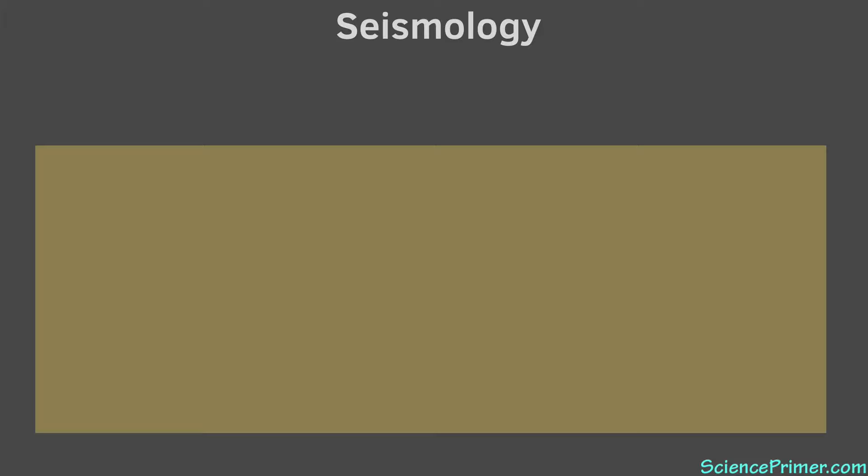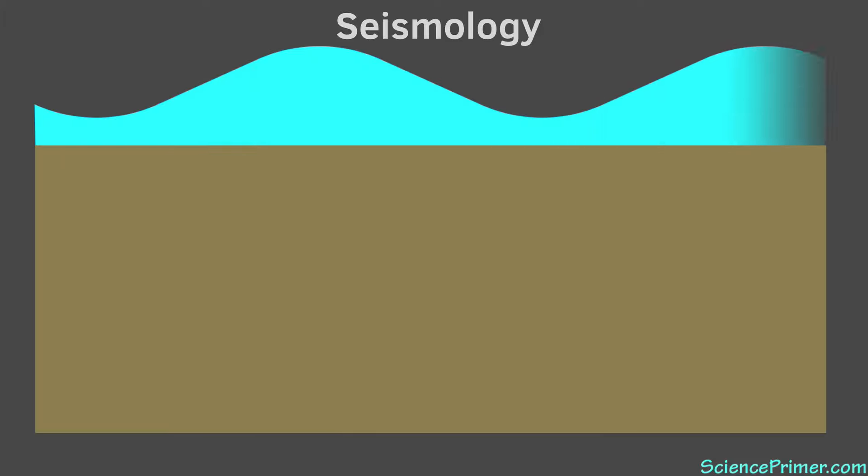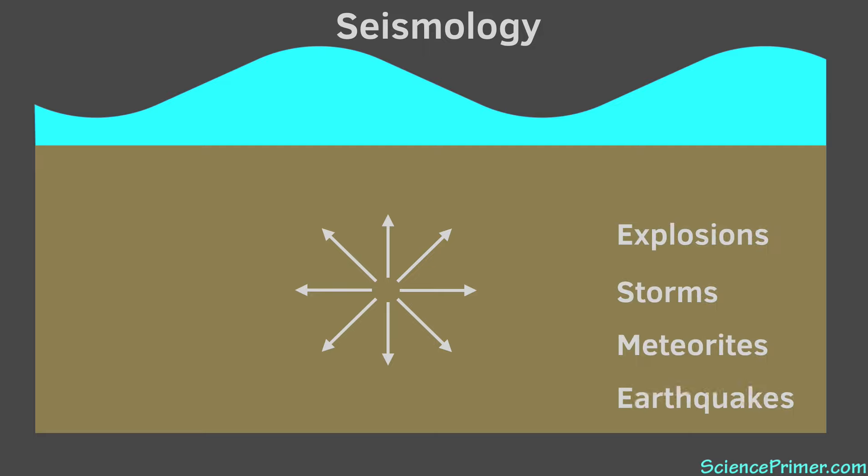Unlike the surface waves we see moving across the surface of bodies of water, the waves seismologists study move through material. These types of waves are called body waves. They are caused by large explosions, storm activity, meteorite impacts, and earthquakes. The waves caused by earthquakes are the most widely studied.